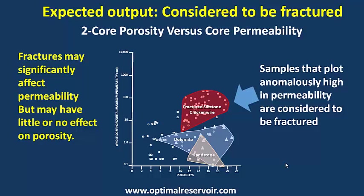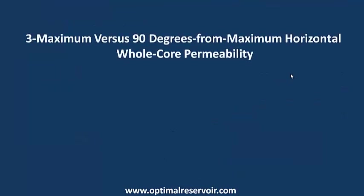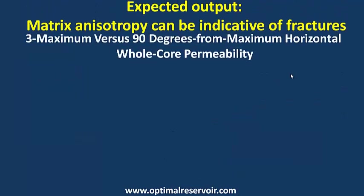The second technique is core porosity versus core permeability. Samples that plot anomalously high in permeability are considered to be fractured, taking into consideration that fractures may significantly affect permeability but may have little or no effect on porosity.